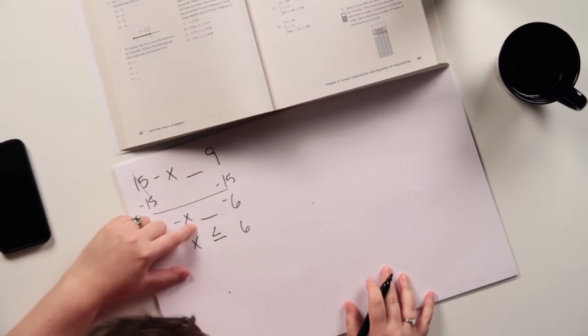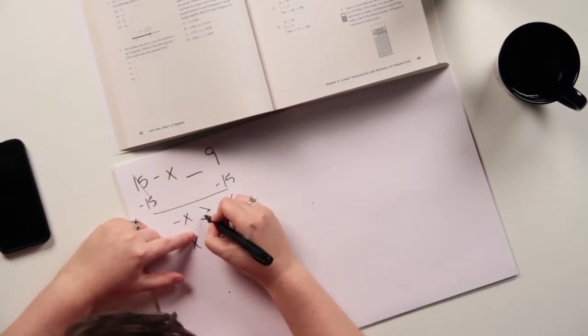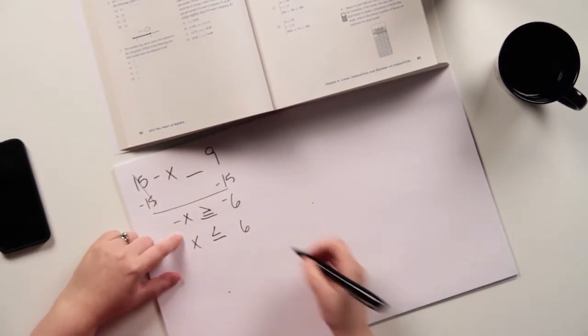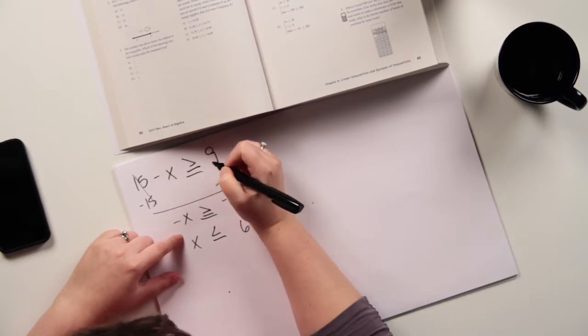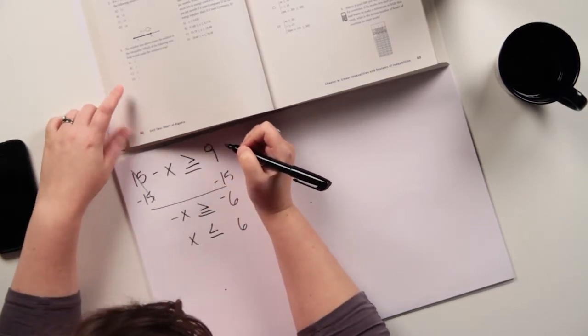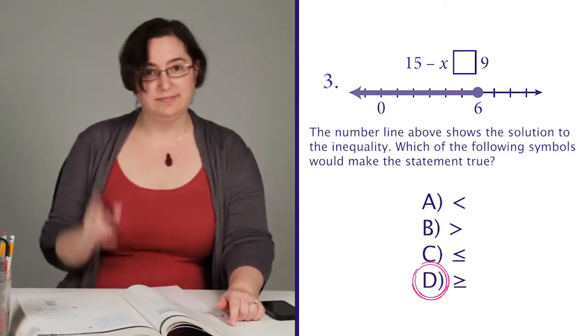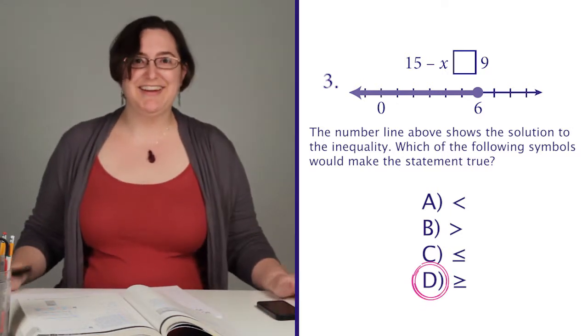Right? But since I had to flip the sign earlier because of that negative, it's going to look like this up in the original. So that's going to be answer choice D. Not getting me, SAT. All right, next one.